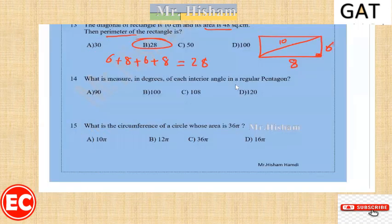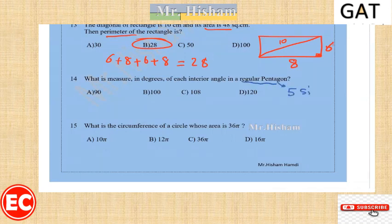Question fourteen: a pentagon is a shape formed from five sides and the measure of each interior angle is 108 degrees. 90 degrees is for a square and 120 degrees is for a hexagon.